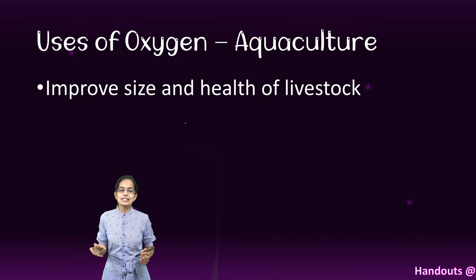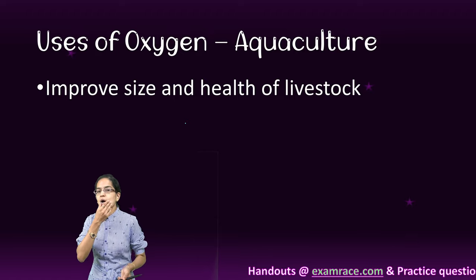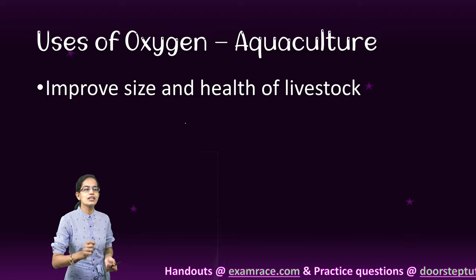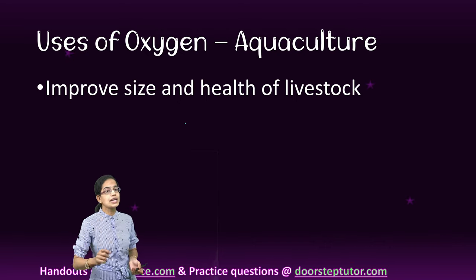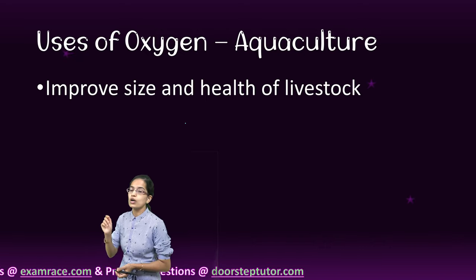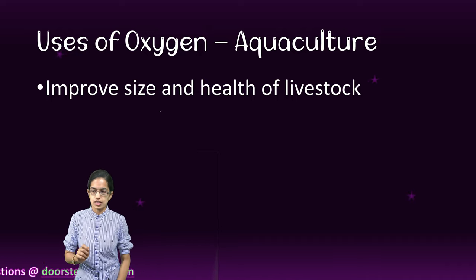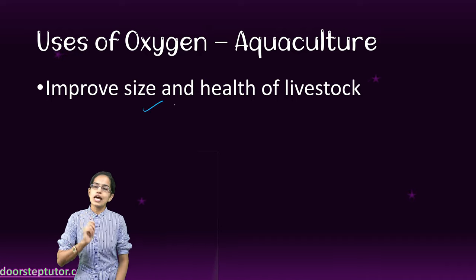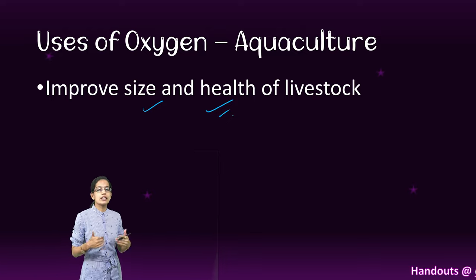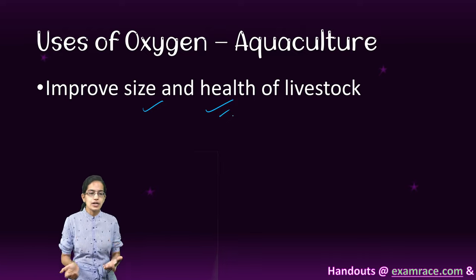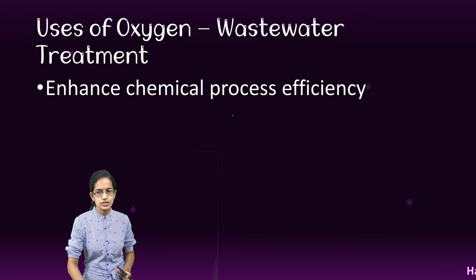The next is the use of oxygen for aquaculture. Aquaculturalists have been trying to improve the breed and health of livestock through a highly oxygenated environment. The size and health of the livestock — the fishes — actually improves, and therefore aquaculturalists have been widely using oxygen these days.